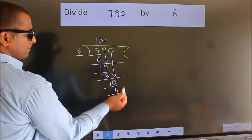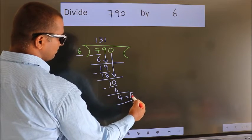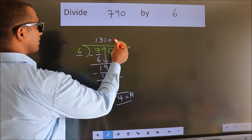No more numbers to bring down. So we stop here. This is our remainder. This is our quotient.